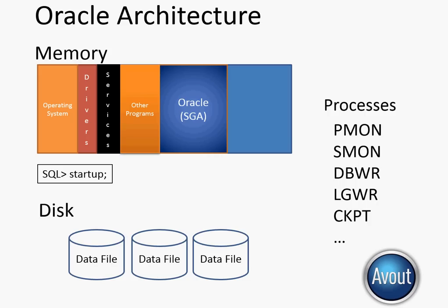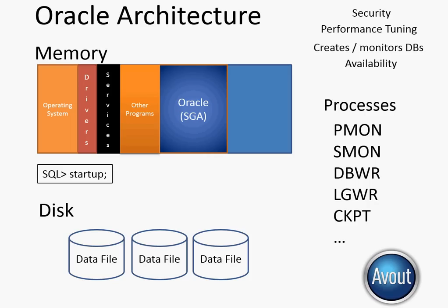In upcoming videos we'll take a look at those processes and how they work. The init.ora file also specifies a lot of other things you use on a regular basis — things like backup and recovery, security, performance tuning, creating and monitoring databases. We're going to use all of these different processes and values in the init.ora file to help us do those types of things and to make sure we have availability for our database, so users can get to it even under different circumstances.